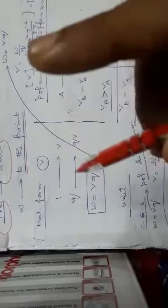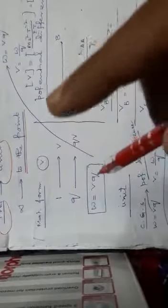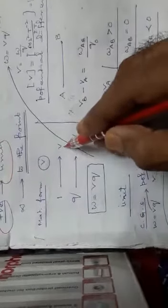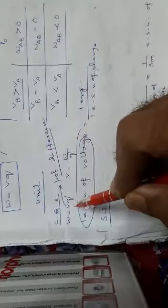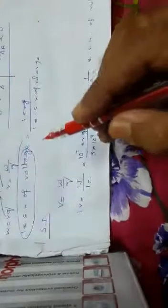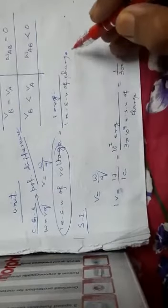To carry a unit positive charge from infinity to a point, the work to be done is V. The work done W equals V into Q. The unit of voltage: 1 volt means 1 joule per 1 coulomb.